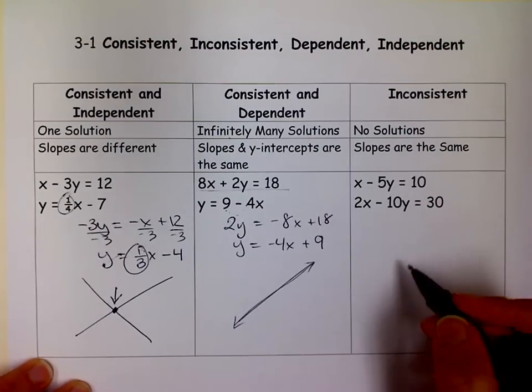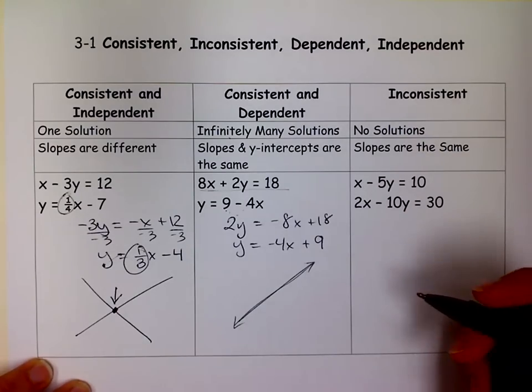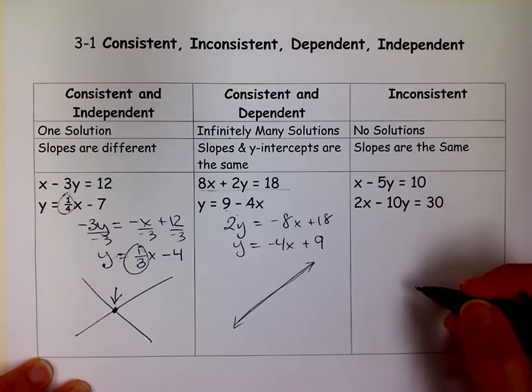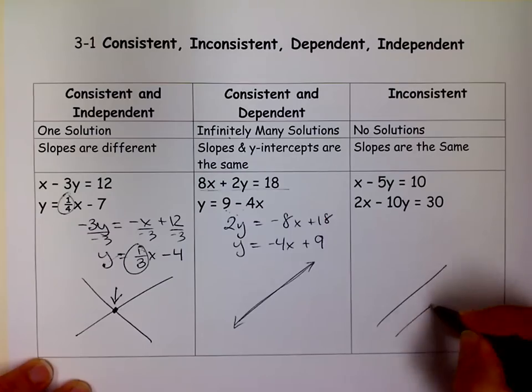Now on to this one. If it's inconsistent, it has no solutions. Well, the only way that you can graph two lines that will never intersect is if you have parallel lines. So it's going to look something like that. But you can tell if they have the same slopes.